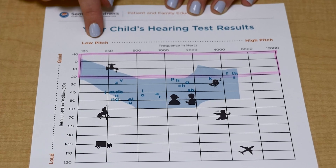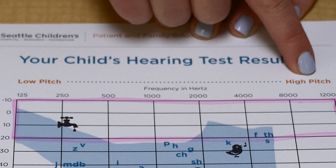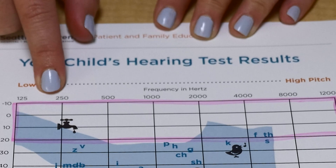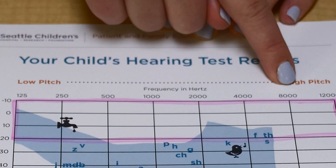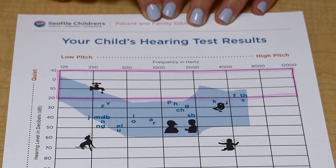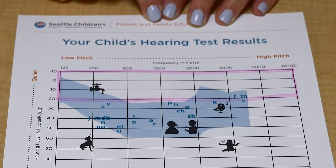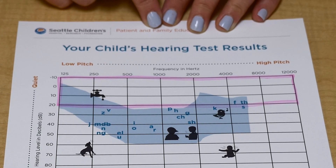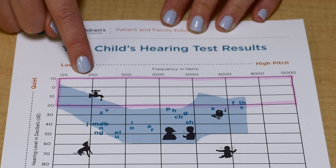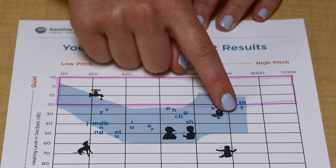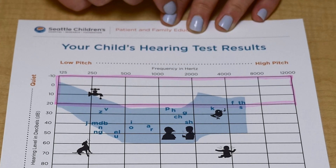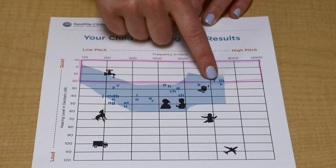Along the top of the chart are the different pitches or frequencies. They are organized like keys on a piano, from low middle to high pitched tones. The reason that we test these pitches or frequencies is because these pitches make up speech and language. For example, a J sound has a low pitch, or an S sound has a high pitch.